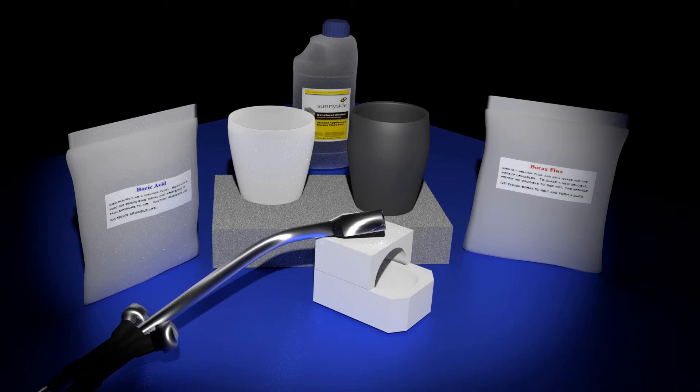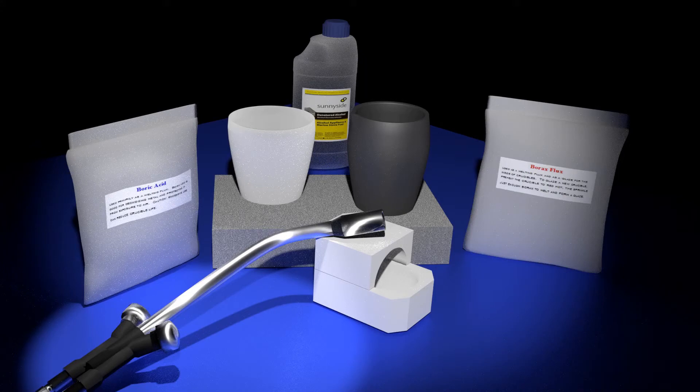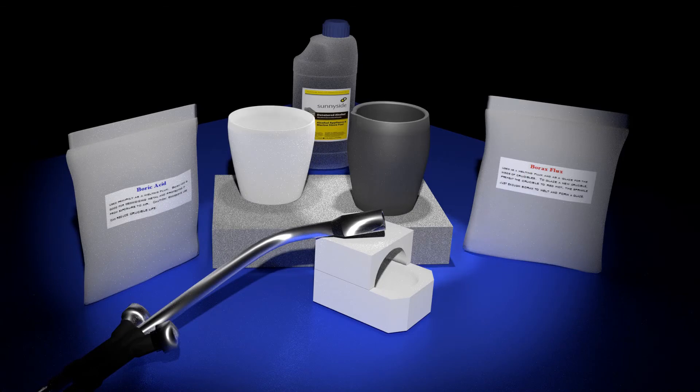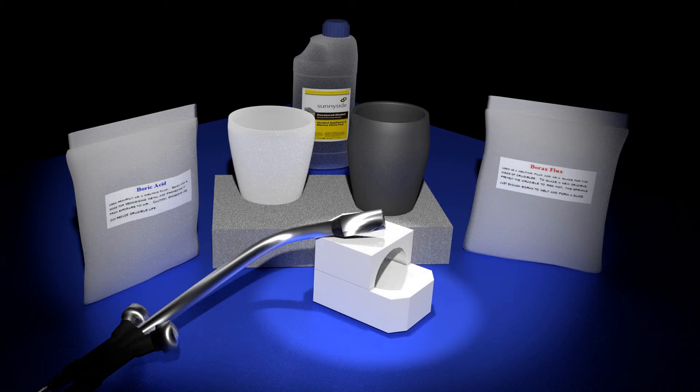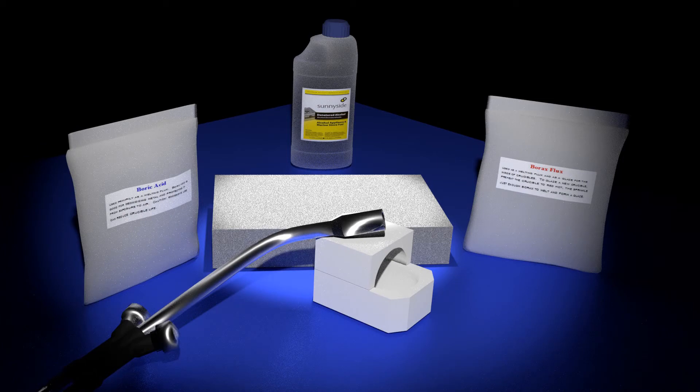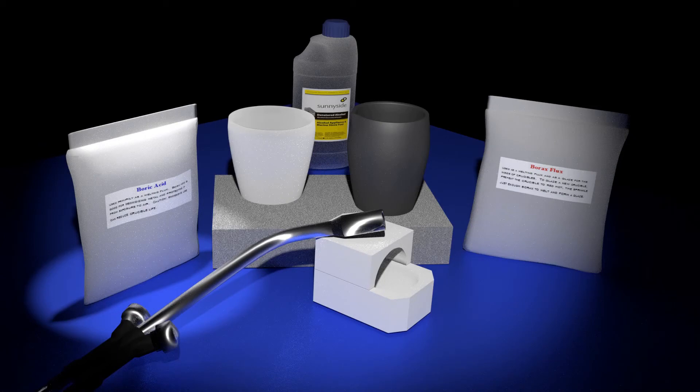Here is what you will need. Melting torch: use a torch made for this purpose. The common propane torch simply will not provide enough BTUs to do the job. Crucible: you can use a standard clay graphite crucible, a ceramic cup-shaped crucible, or you can use a burner ceramic crucible. Crucible rest: any refractory material like a brick or cinder block for example will do the job. Flux: common fluxes that are typically used include borax, boric acid, or a combination of the two. Alcohol.